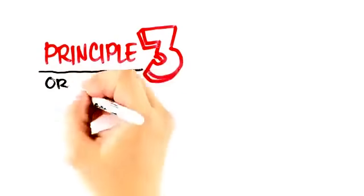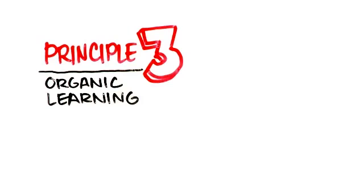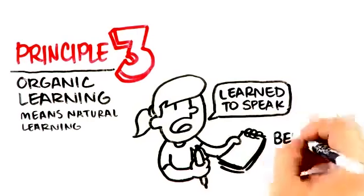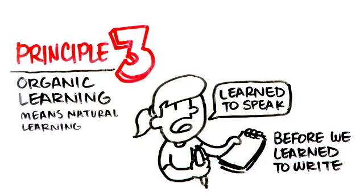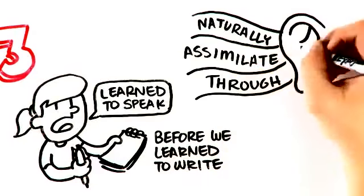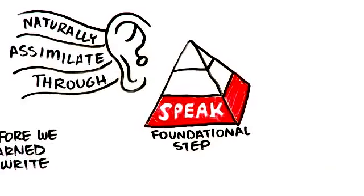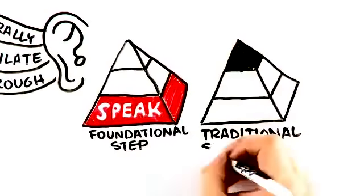Principle number three, is organic learning. Organic learning means natural learning. As kids, we learn to speak before we learn to write. Dr. Pimsleur's research proves that we naturally assimilate language through hearing. This should be the foundational step in learning a language. Traditional schooling does the exact opposite.